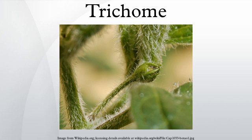Bean leaves have been used historically to trap bed bugs in houses in Eastern Europe. The trichomes on the bean leaves capture the insects by impaling their feet. The leaves would then be destroyed. Trichomes are also an essential part of nest building for the European Woolcarder bee, which incorporates trichomes into their nests by scraping them off of plants and using them as a lining for their nest cavities.